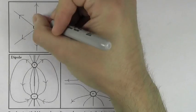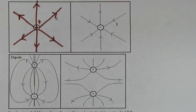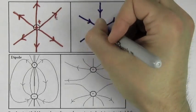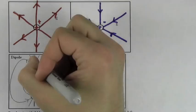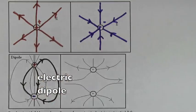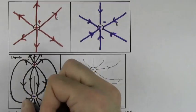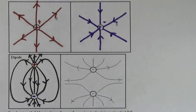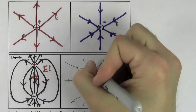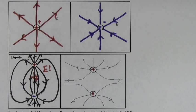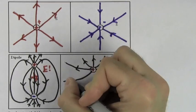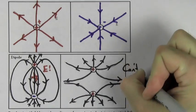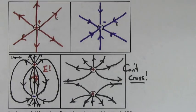Electric field lines point radially outward from a positive charge and radially inward toward a negative charge. A positive and negative charge placed next to each other is called an electric dipole. One of the rules for electric field diagrams is that the electric field will be largest where the electric field lines are most closely packed together. If you were to put two positive charges or two negative charges next to each other, they would create a characteristic electric field diagram. Another rule is that the electric field lines can never, ever cross.